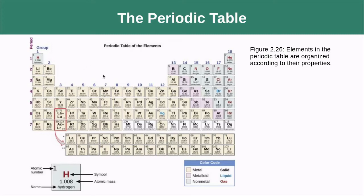Group one, group two, group three — all elements in group one have similar properties, just like all elements in group 18 have similar properties. There is additional organization: these are our metals, these are our metalloids, and these are our non-metals.